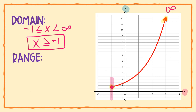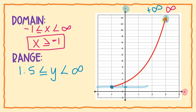For range, we go bottom to top on the y axis. At the top, because there's an arrow pointing up, it's automatically positive infinity. At the bottom, be careful — each box equals 1, but the endpoint is not right at a box. It's in between, so that value is 1.5. Since the endpoint is colored in, the range is y is greater than or equal to 1.5.